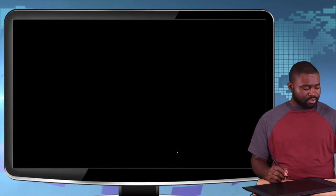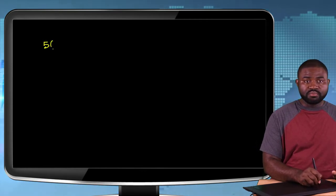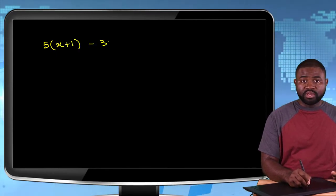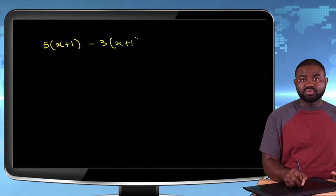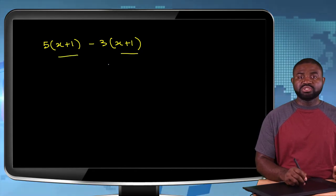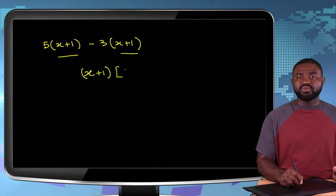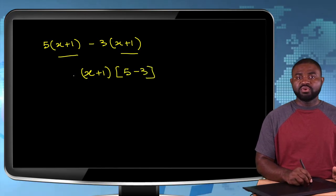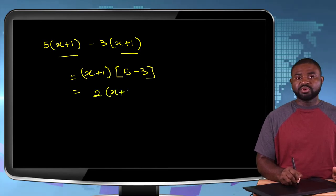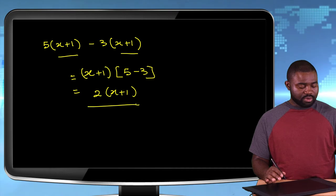Another example that I would like for us to consider would be 5(x+1) - 3(x+1). What do you notice here? You see that (x+1) and (x+1) is common. So we have here (x+1) bracket. If we take it out, we are going to be left with 5 - 3, which is going to be 5 - 3 is 2. So this is 2(x+1). So we have simplified as well as factorized that particular expression.